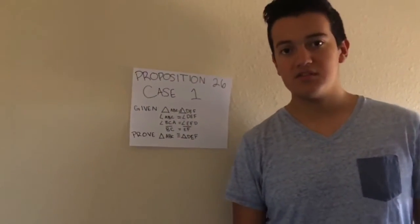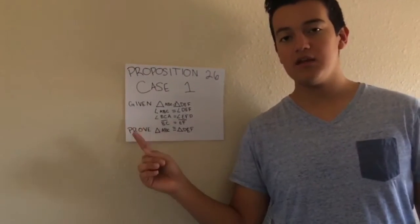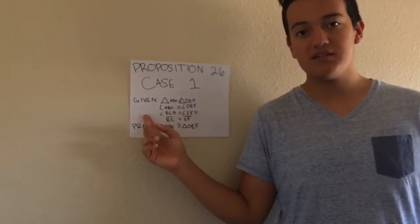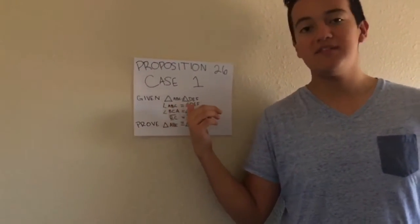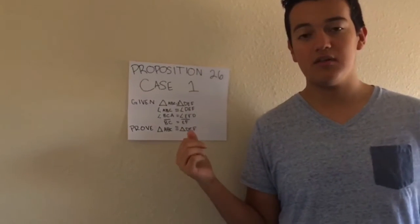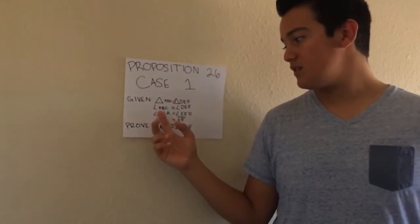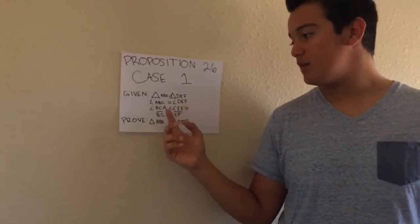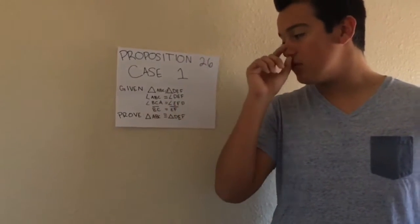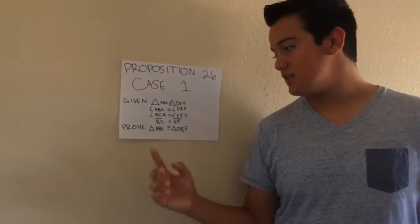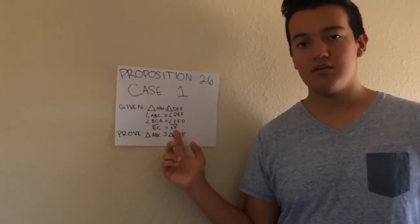So for every one of Euclid's propositions, there are two things called a given and a prove. So what's given already is that we have triangles ABC and DEF. We also must know that both angles ABC and DEF and BCA and EFD are equal. We also need to know that sides BC and EF of each triangle are equal.